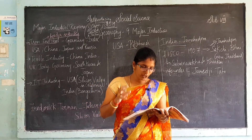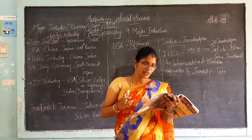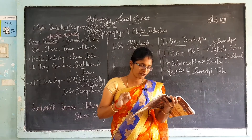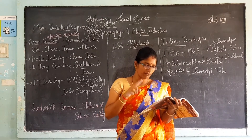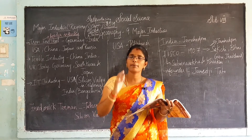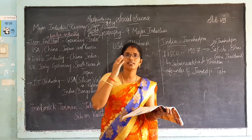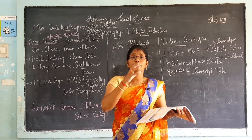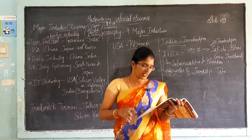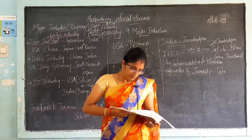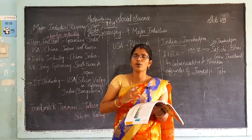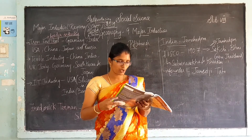Due to the development of iron and steel in Jamshedpur, other allied manufacturing such as chemical manufacturing, locomotive parts, agricultural equipment, machineries, tin plates, cables, and wires also came up in this region. The picture shows Jamsetji Tata, who is the founder of TISCO.